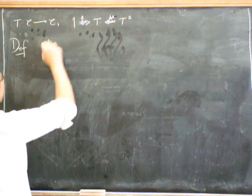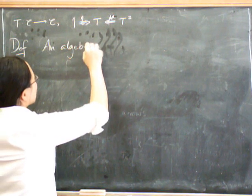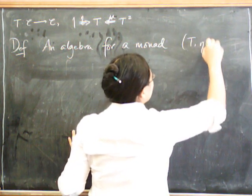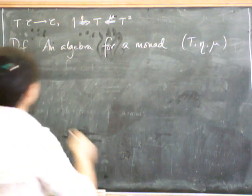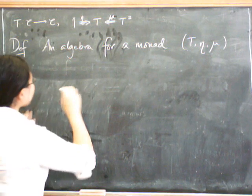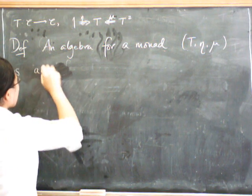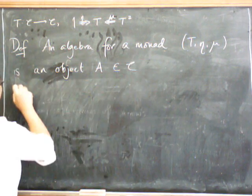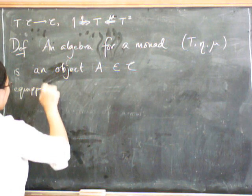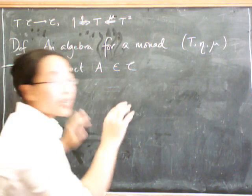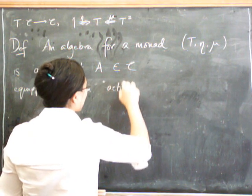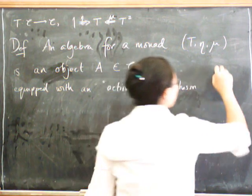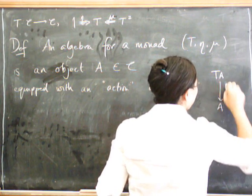Here's the definition of an algebra. An algebra for a monad T (with eta and mu), is the following. Fundamentally, it's an object A — which you can call the underlying object — so that's an object of C, equipped with something we'll call the action: a morphism in category C from T of A to A, which we'll call theta.